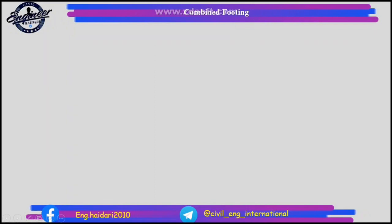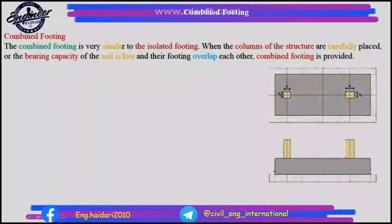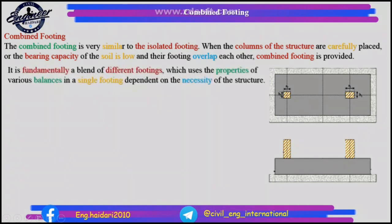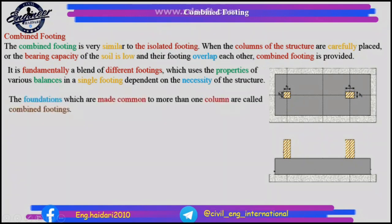Combined footing: the combined footing is very similar to the isolated footing. When the columns of the structure are closely placed or the bearing capacity of the soil is low and their footings overlap each other, combined footing is provided. It is fundamentally a blend of different footings, which uses the properties of various bases in a single footing depending on the necessity of the structure. Foundations made common to more than one column are called combined footings.